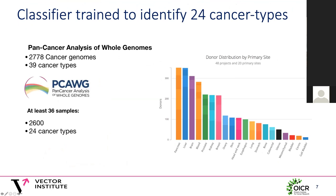To train the classifier, I used data from the Pan-Cancer Analysis of Whole Genomes, or PCAWG. PCAWG has collected whole genome sequencing of about 2,800 cancer samples across 39 different cancer types. In order to have enough training data, I restricted myself to 24 relatively common cancer types, each with samples from at least 36 unique donors in PCAWG. This left about 2,600 samples in total for training, validation, and testing.